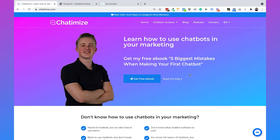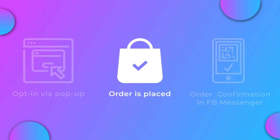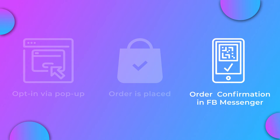The strategy I'm going to use for the order confirmations consists of three steps. First, we want someone to opt in to our Messenger chatbot — I already showed this in my previous video about abandoned cart reminders and abandoned product browse reminders. But once someone has opted in, they complete step one. Step two: the customer creates an order. Step three: we automatically send them a confirmation in Facebook Messenger.